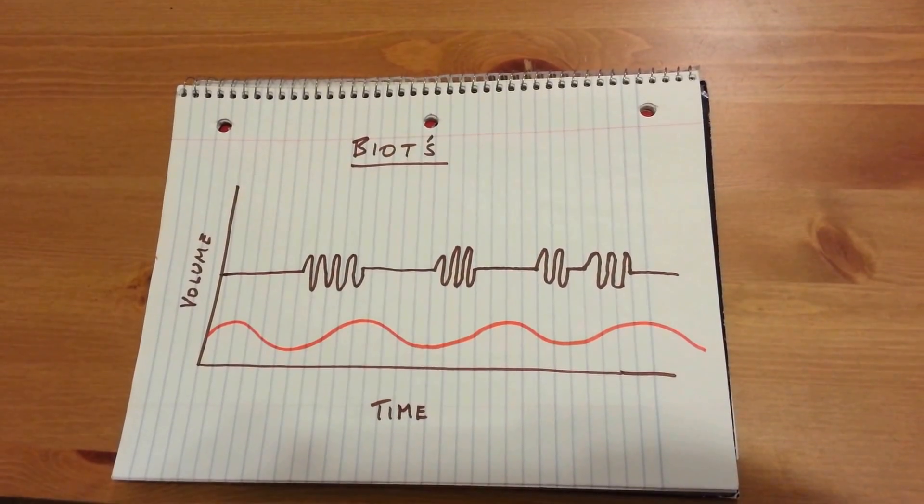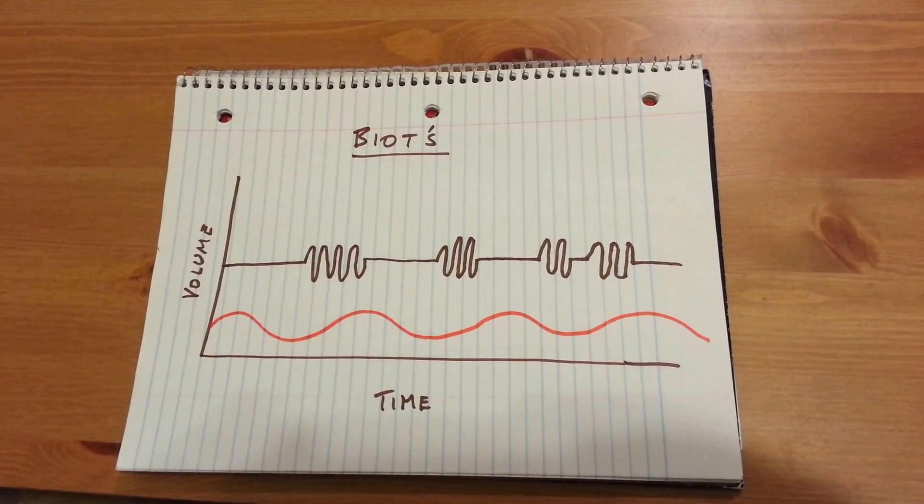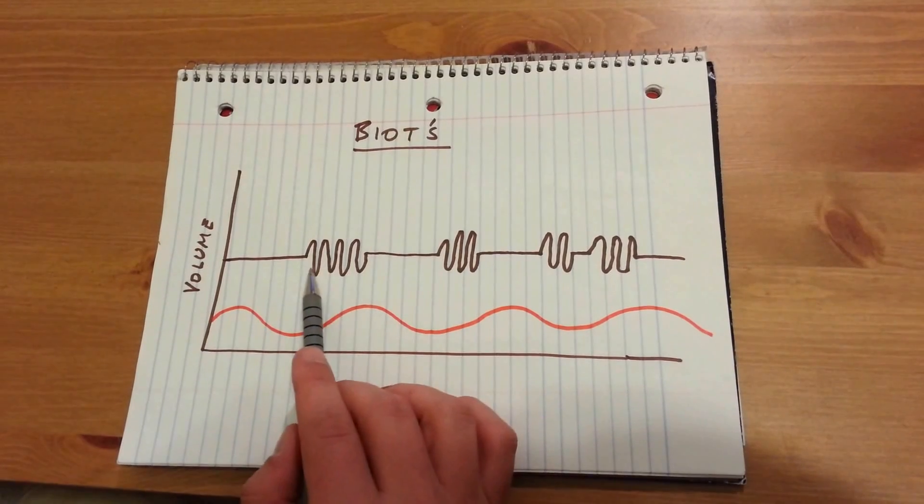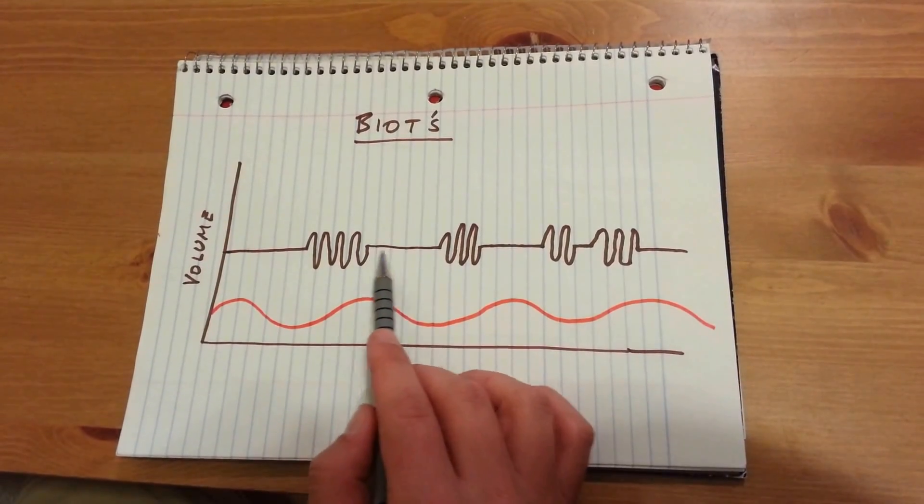Biot's respiration pattern is an abnormal style of breathing characterized by short breaths of shallow depth followed by periods of apnea.